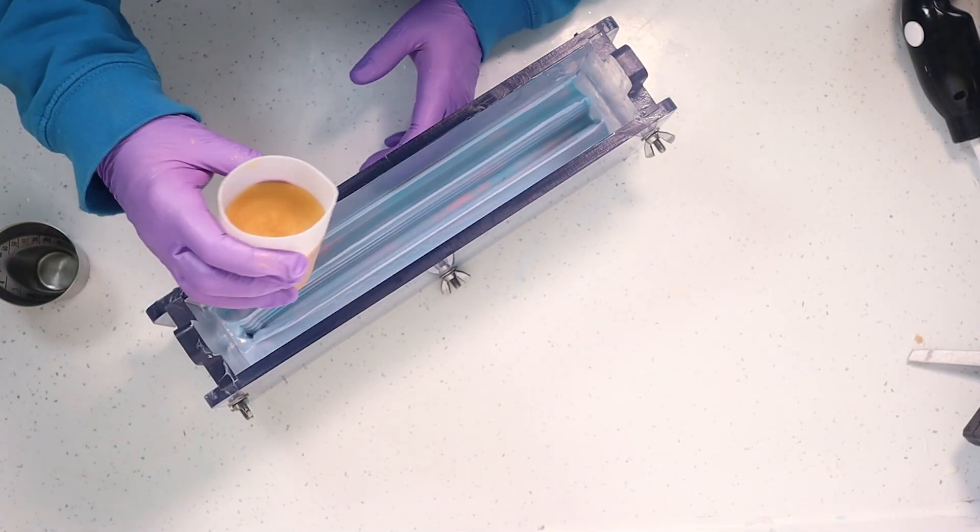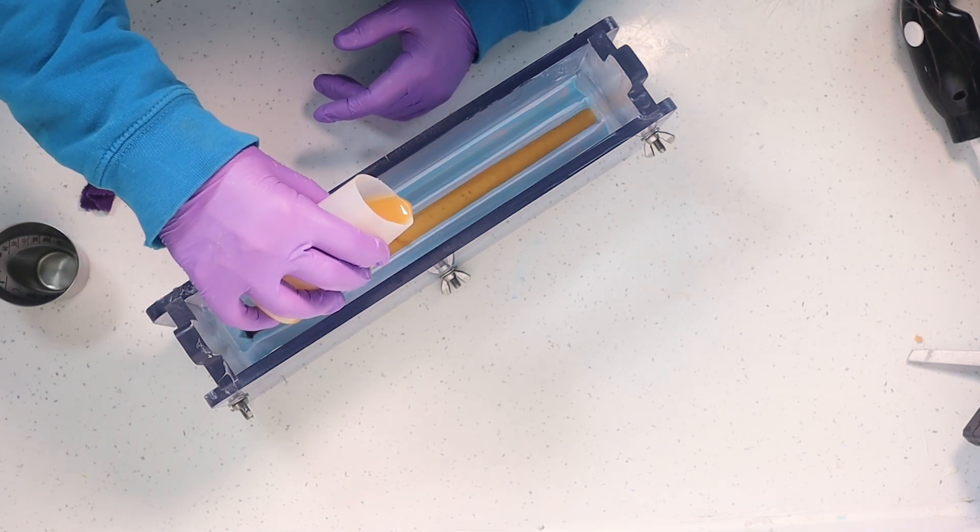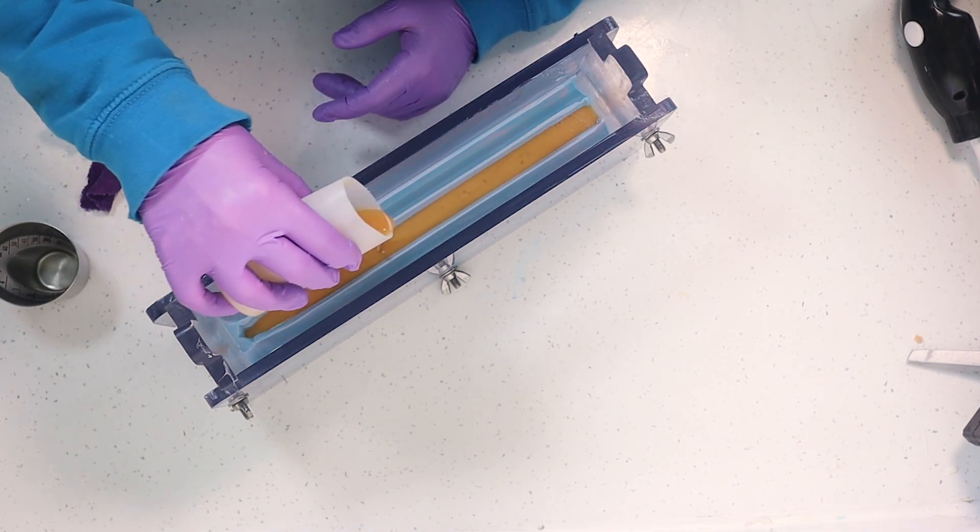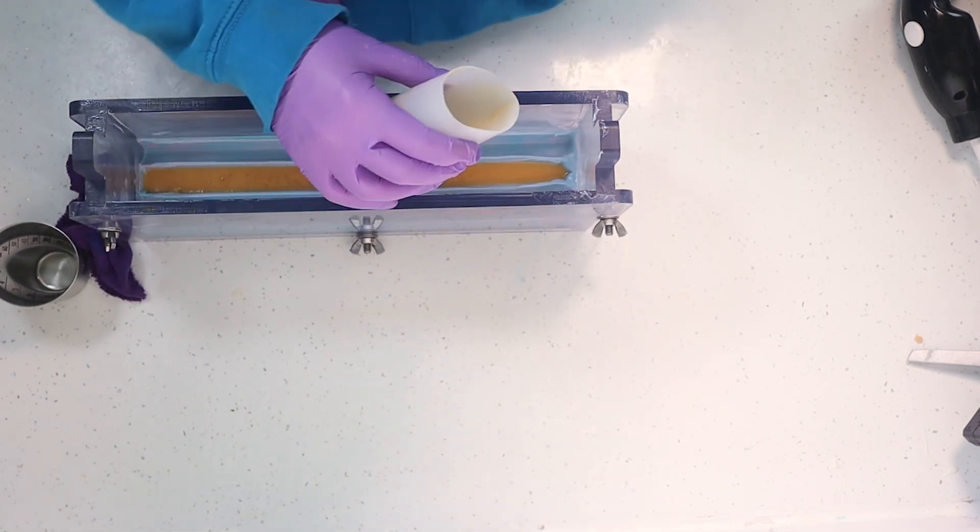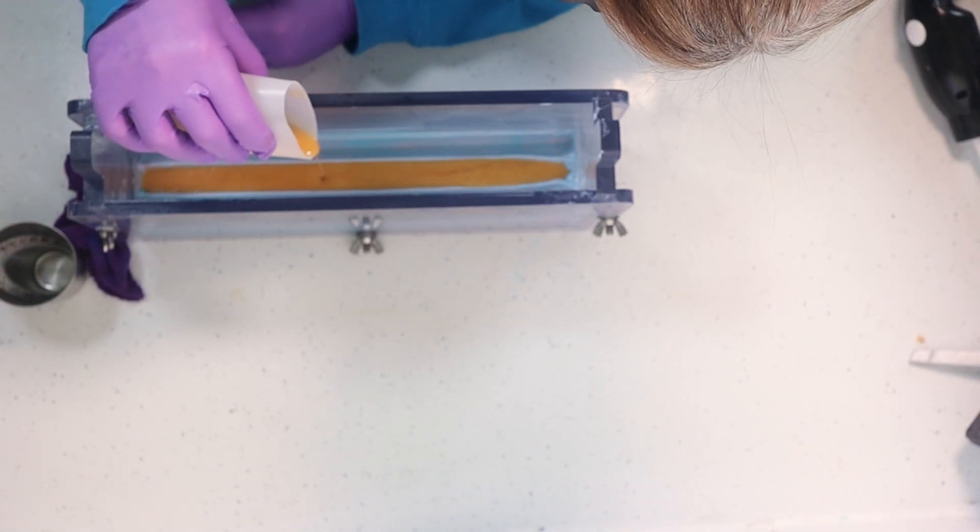Next I made up some gold soap batter, and this is Golden Shimmer from Micamama. I made it up in exactly the same way, dispersing that fragrance oil in first, and then I'm just literally pouring it into the horn and filling that right to the top.